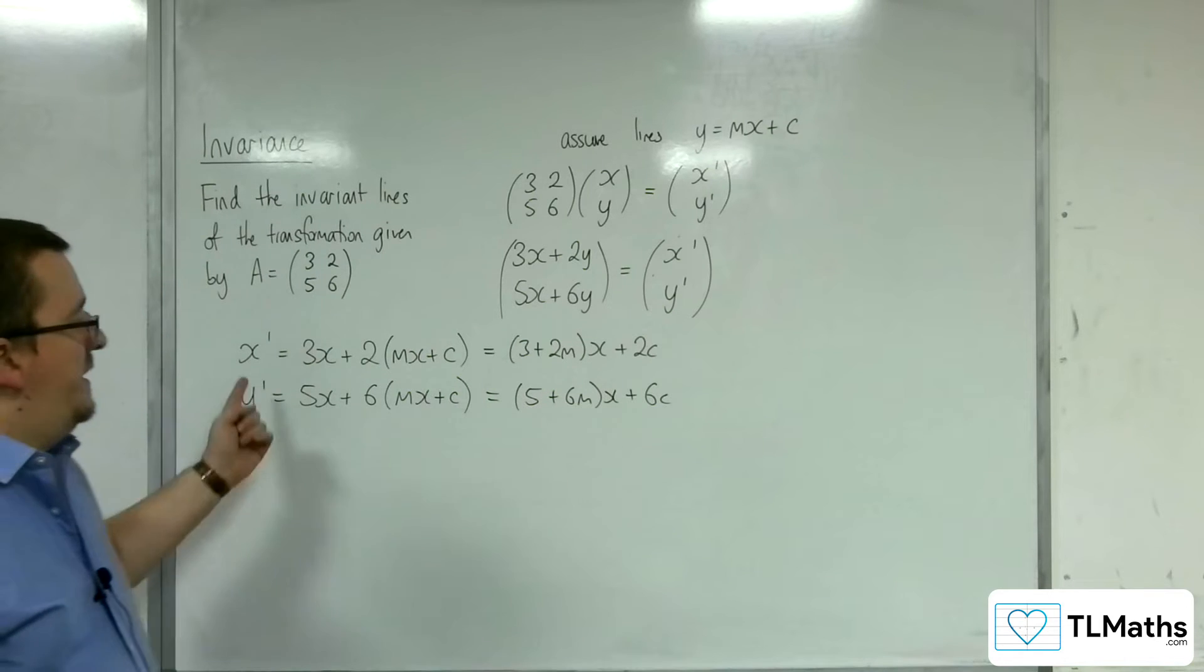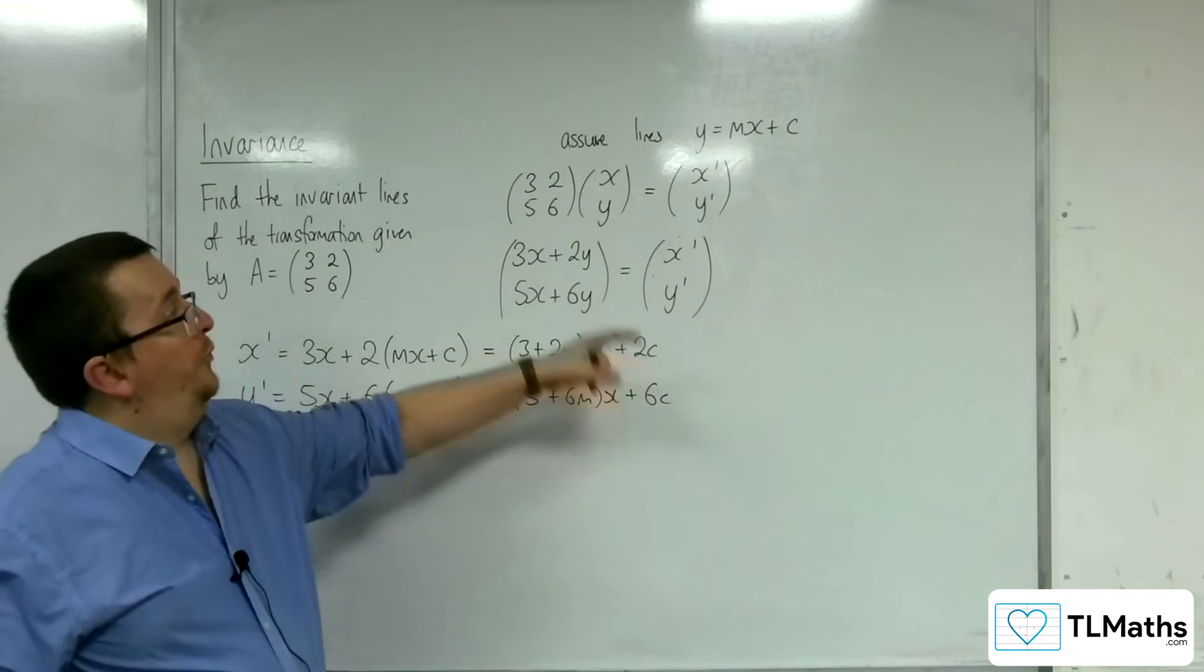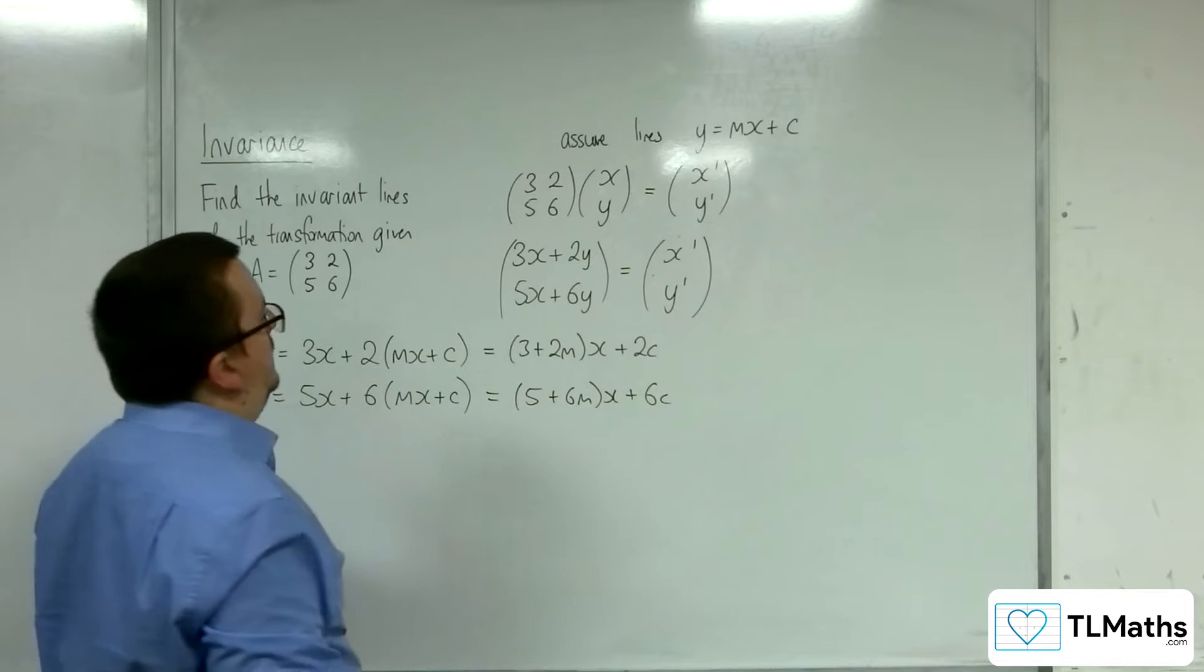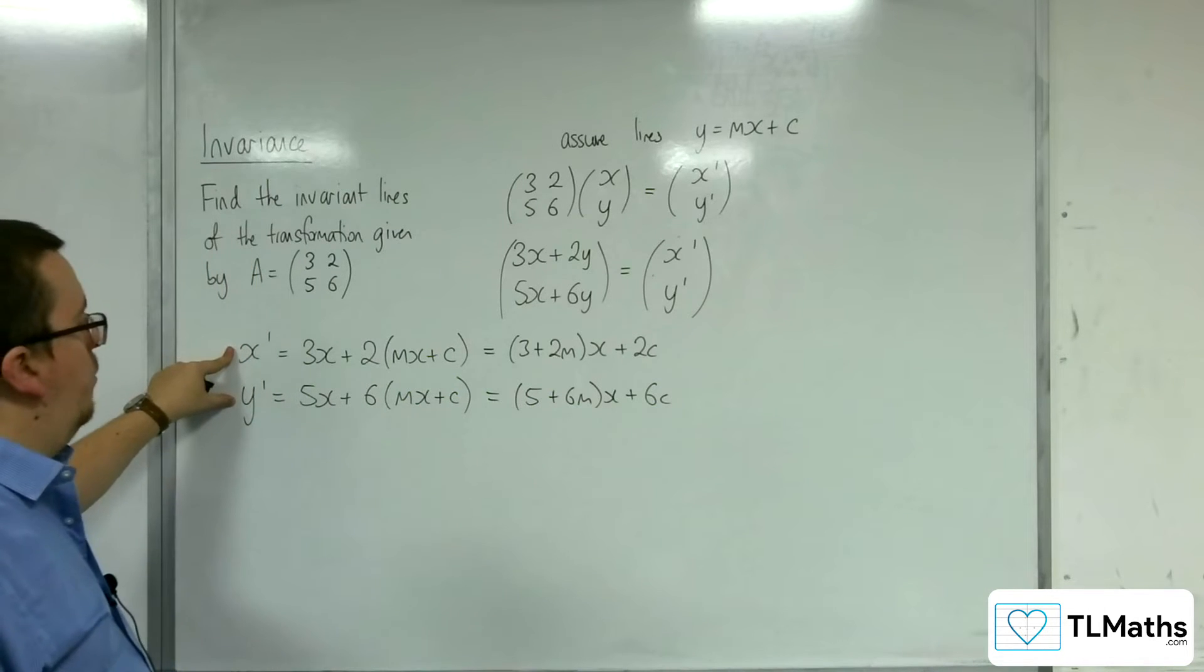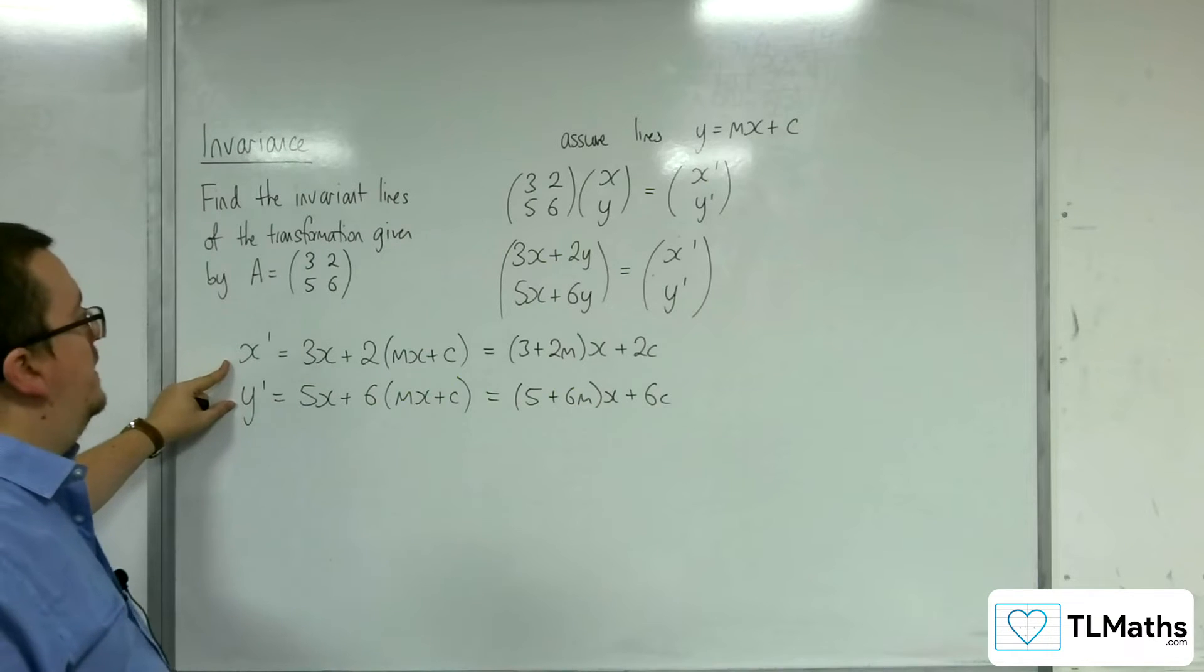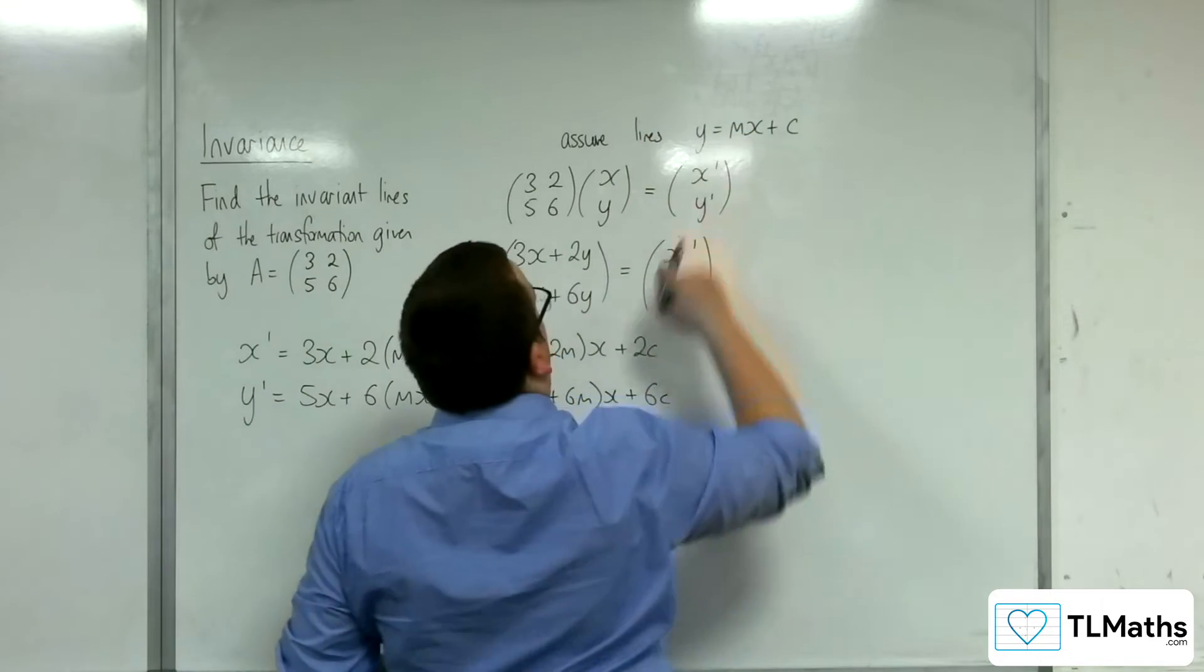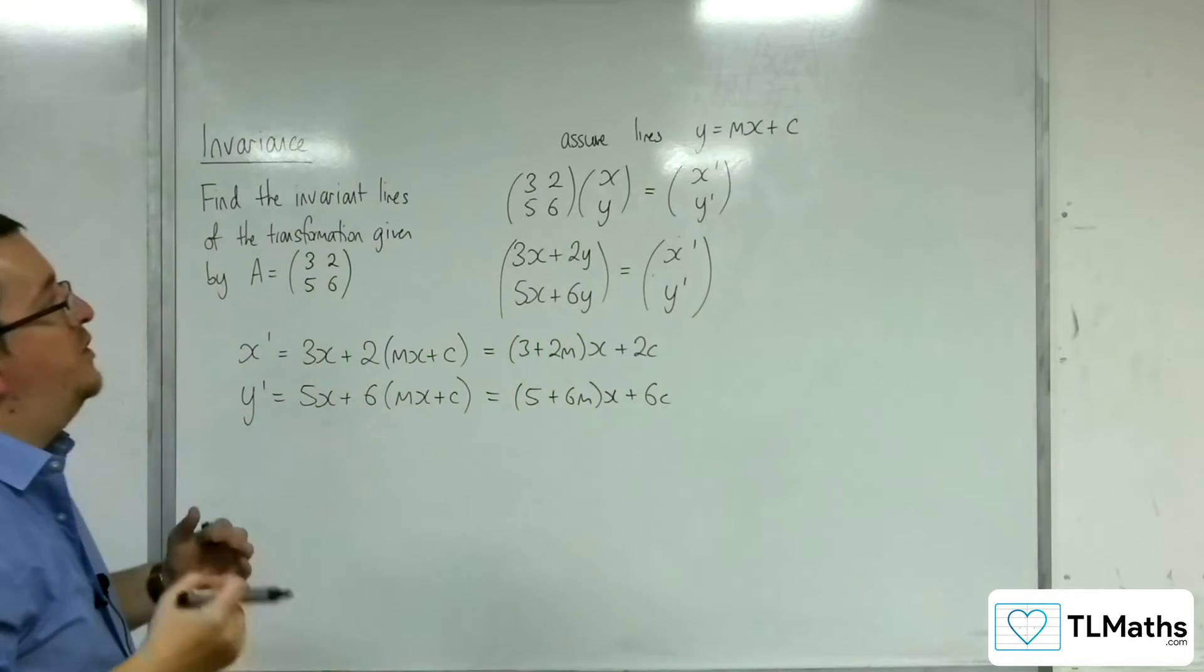Now remember, the x prime and y prime are also points that are on this line y equals mx plus c. So if these are the x prime and y prime are the coordinates that I know on this line, then if I substitute these into this, everything should still work.